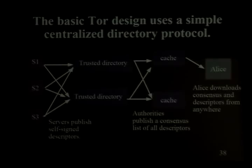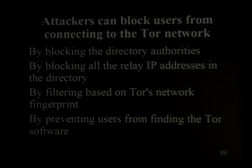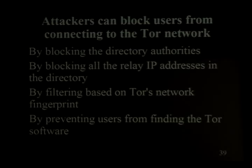This big central consensus includes a list of all the IP addresses of all the relays. So the first way to block TOR is to block those eight directory authorities — they're hard-coded in the TOR software. Nobody can bootstrap: you download TOR, run it, it tries to connect to one of these eight, it doesn't work, it gives up. China did this in September 2009.